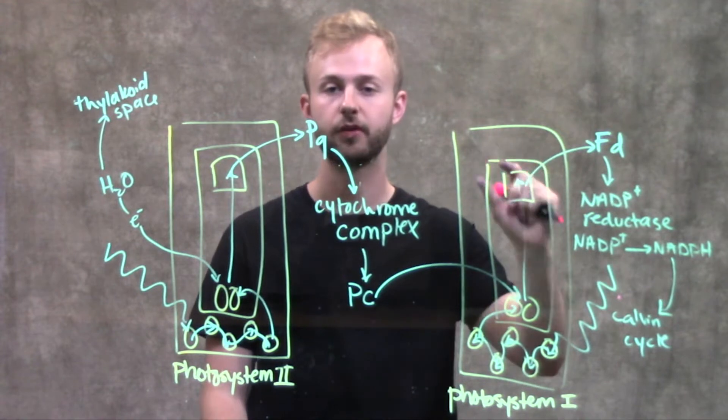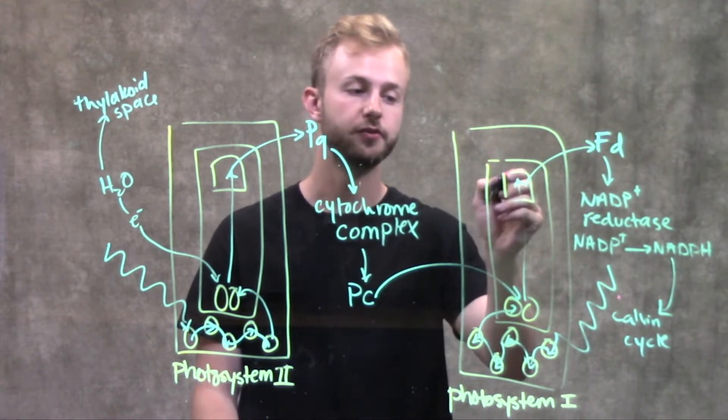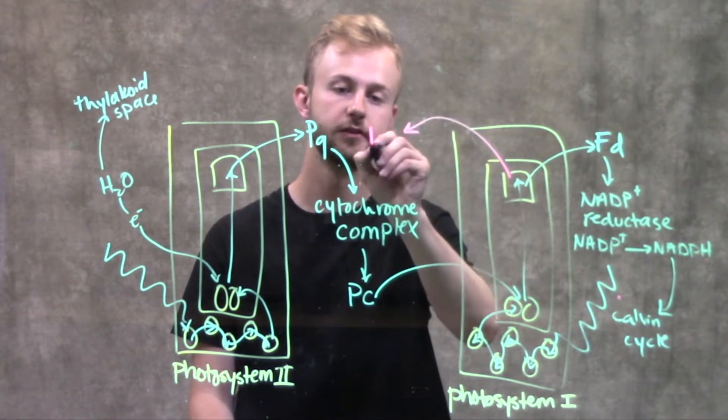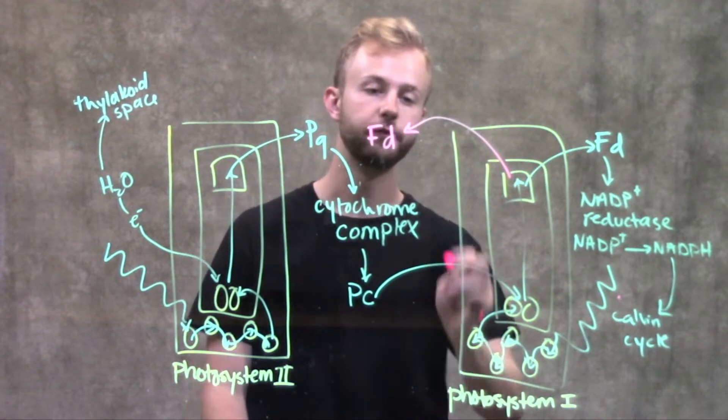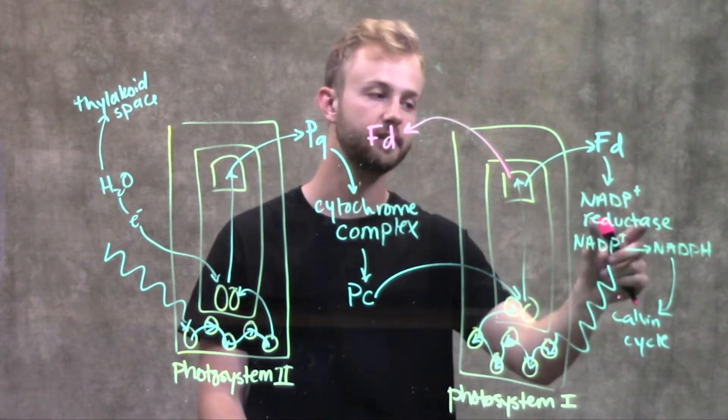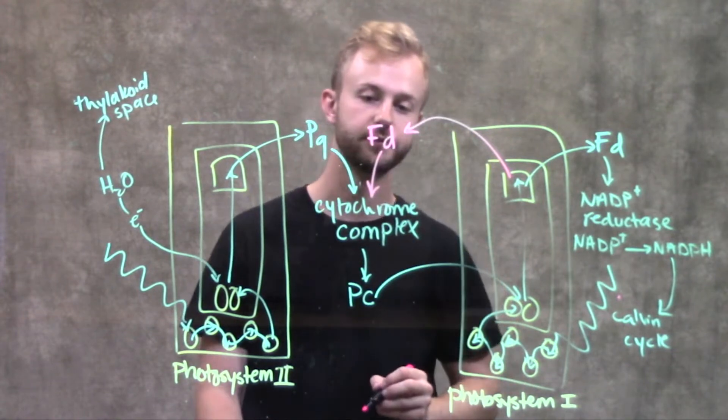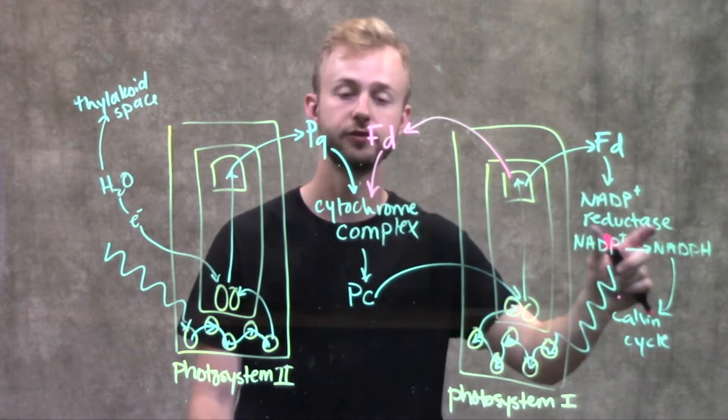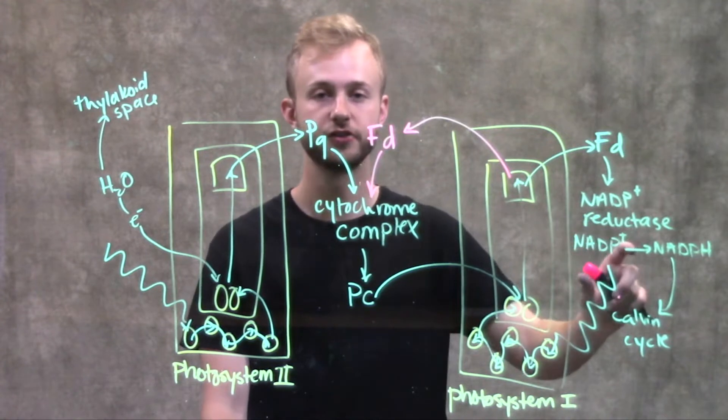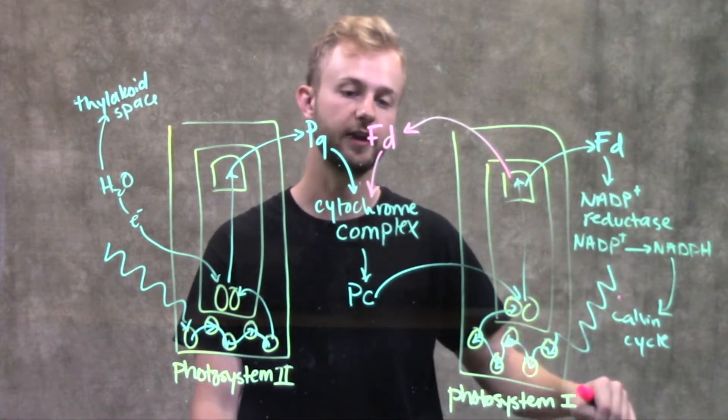The electron gets excited and picked up by the primary electron acceptor, and it'll be passed to ferredoxin. But from ferredoxin, instead of going to NADP+ reductase, it goes to the cytochrome complex. That means we're not going to produce any NADPH, so we're not sending anything to the Calvin cycle.